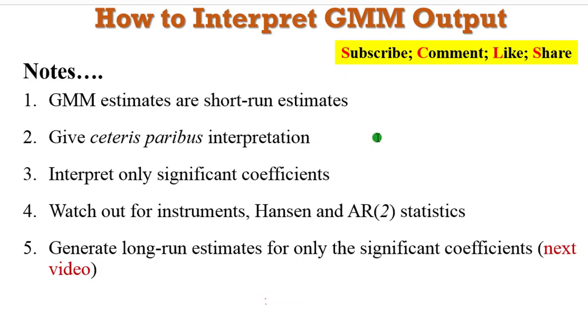Other information you need to consider. Always know that GMM estimates are short-run estimates. Always remember to give a ceteris paribus interpretation. And limit interpretations to only significant coefficients. As a matter of emphasis, watch out for the number of instruments, the Hansen and AR2 statistics. Then generate long-run estimates for only the significant coefficients. So I will cover this point number 5 in the next video.